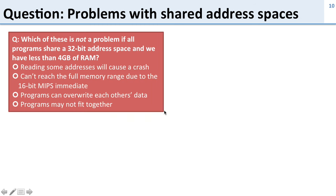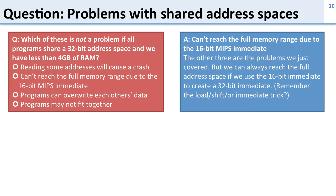Here's a question about shared address spaces: which of the following is NOT a problem if all programs share a 32-bit address space and we have less than 4 gigabytes of memory? The answer is: can't reach the full memory range due to 16-bit immediate — we saw that we can make a 32-bit immediate using two 16-bit immediates in two instructions, so that's not the problem. The other options are real problems: reading some addresses will cause a crash if we don't have 4 gigabytes of memory, programs can override each other's data in the same address space, and programs may not fit together due to fragmentation.